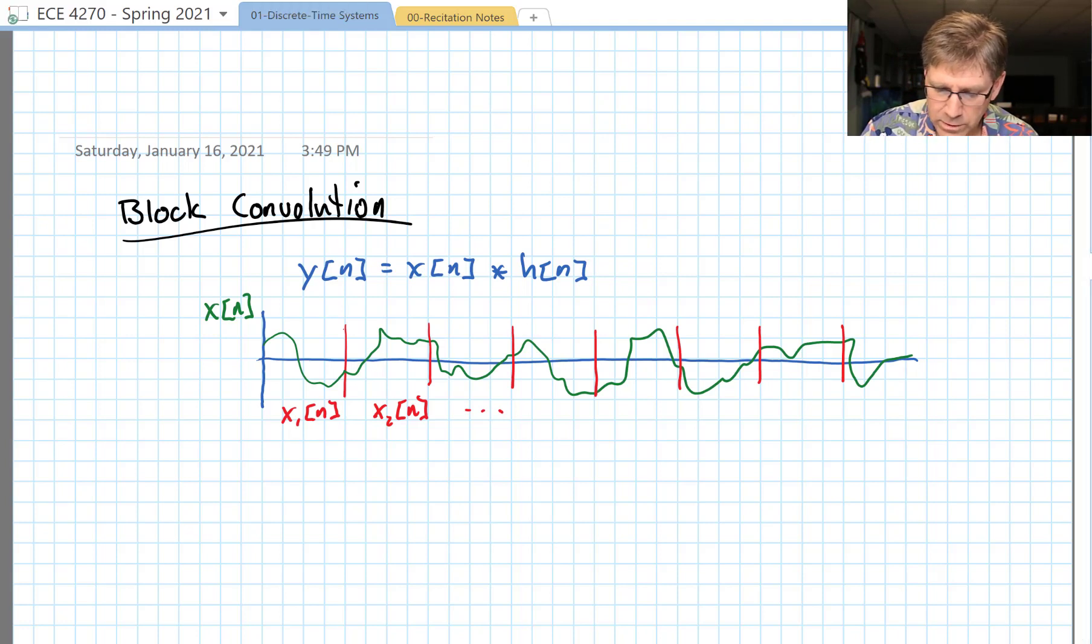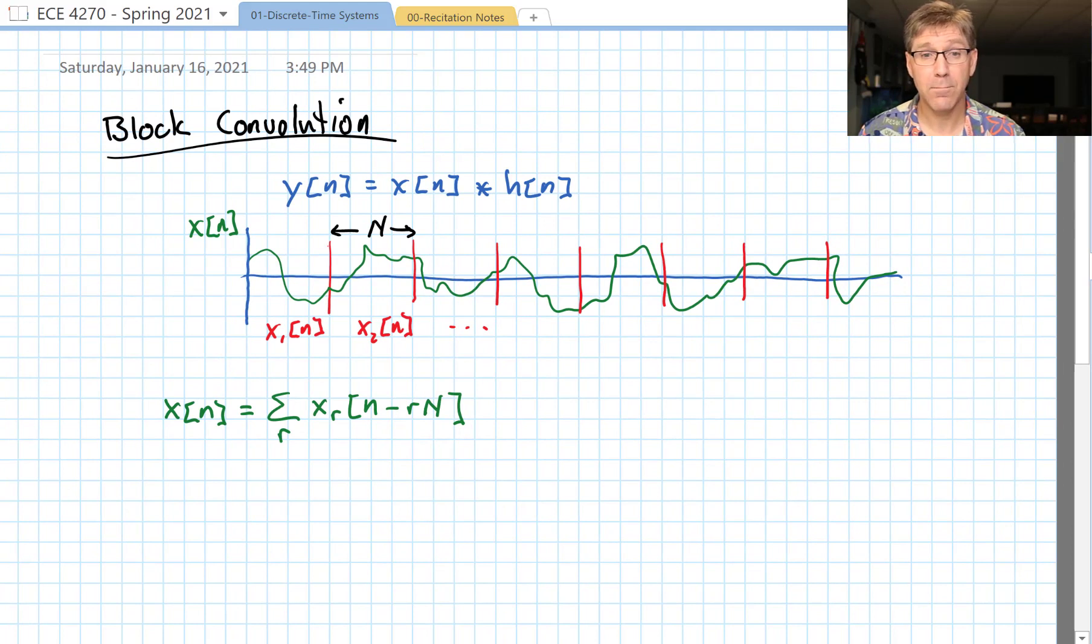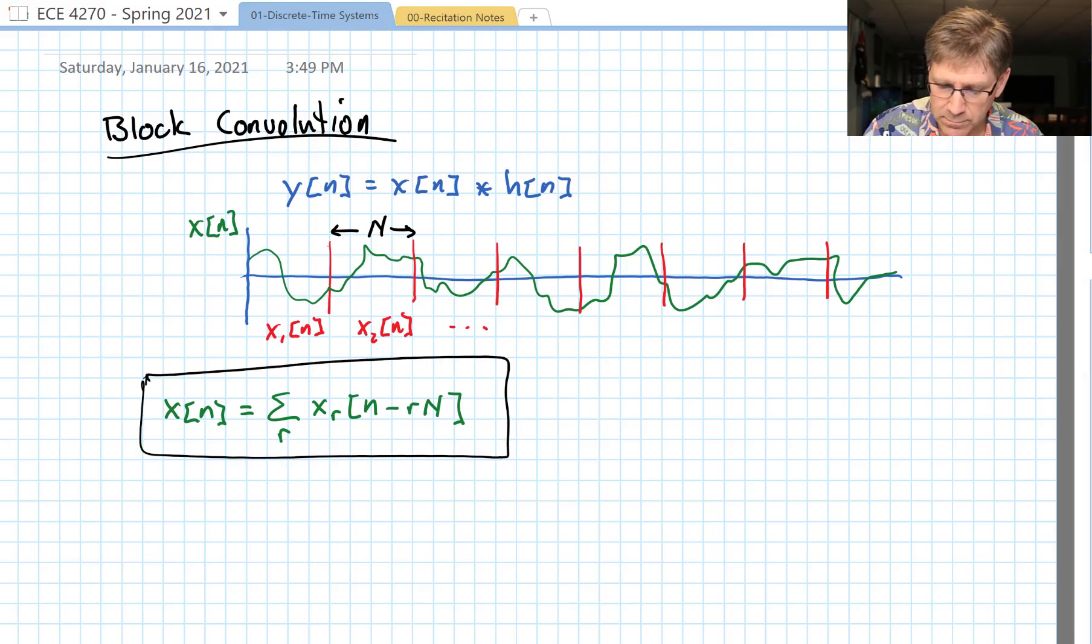So now we can write our original signal x[n] as a sum of these chunks. First I guess I should define the length of one of these chunks as capital N. So this definition we will sum over r, x sub r, so that's one, two and so on and so forth. But we have to, if we're not careful they'll all pop on top of each other, so we have to take into account that each one is shifted by N samples.